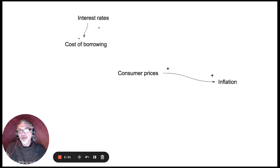If interest rates go down, the cost of borrowing goes down, and in turn the cost of production. If that goes down, then consumer prices go down. So as you can see, we can have a plus plus or a minus minus just to show how we think these things affect each other.